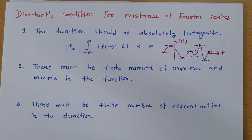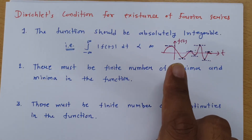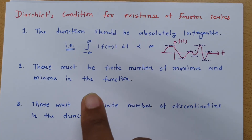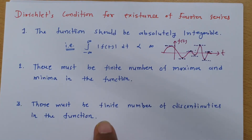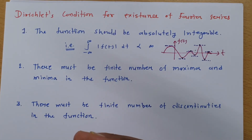So ultimately, the three Dirichlet conditions for Fourier series calculation are: one, the signal should be absolutely integrable; two, the signal should have a finite number of maxima and minima; and three, there must be a finite number of discontinuities in the function. Notably, these same three conditions also apply for the existence of the Laplace transform and the Z transform.